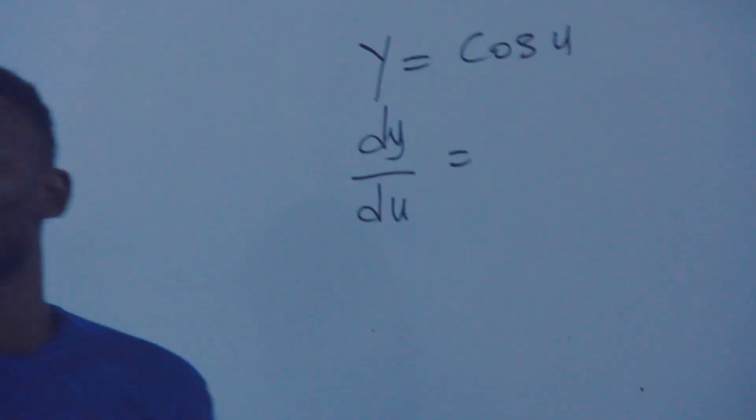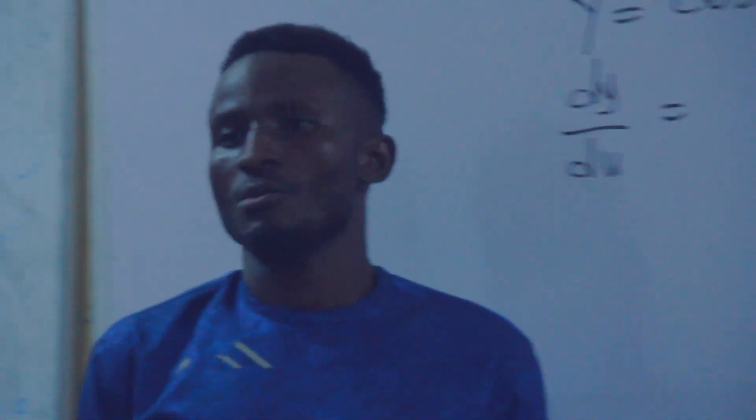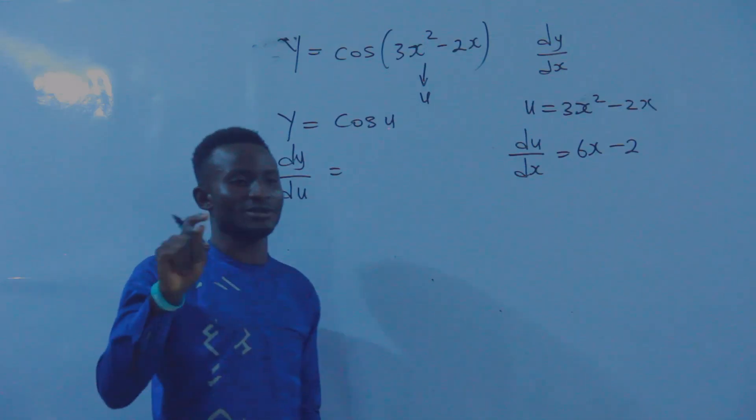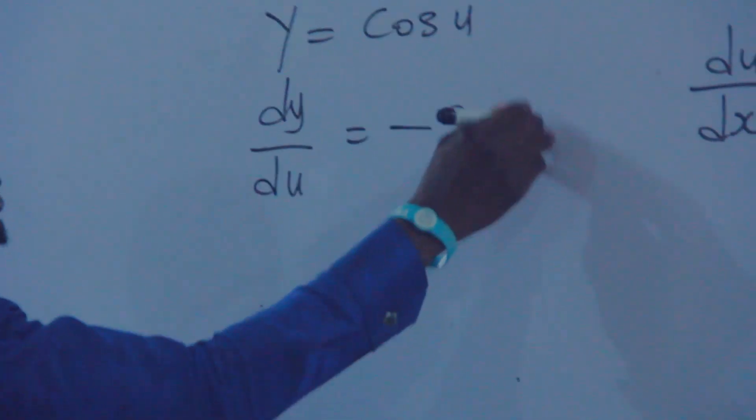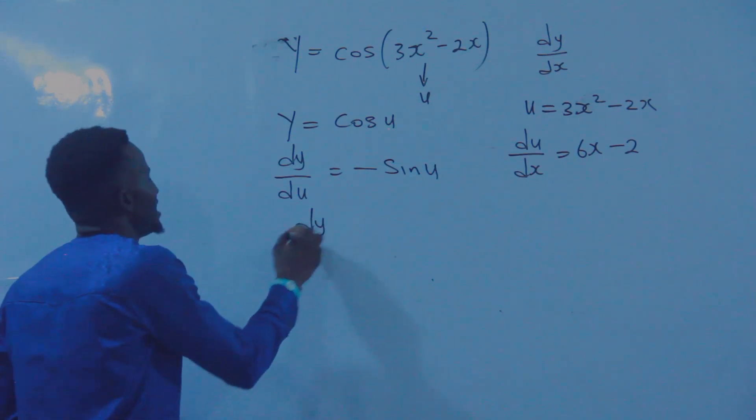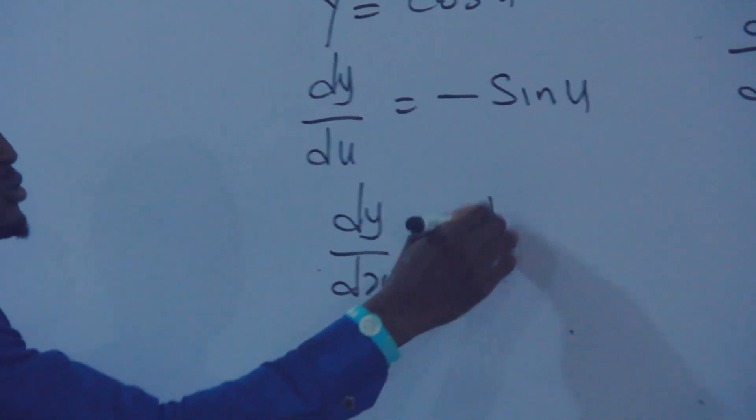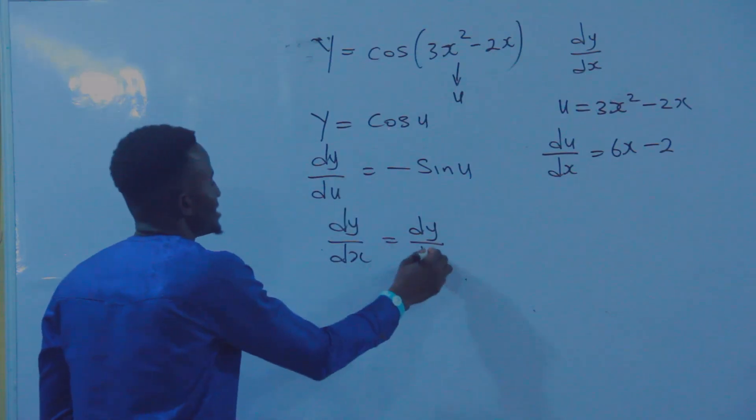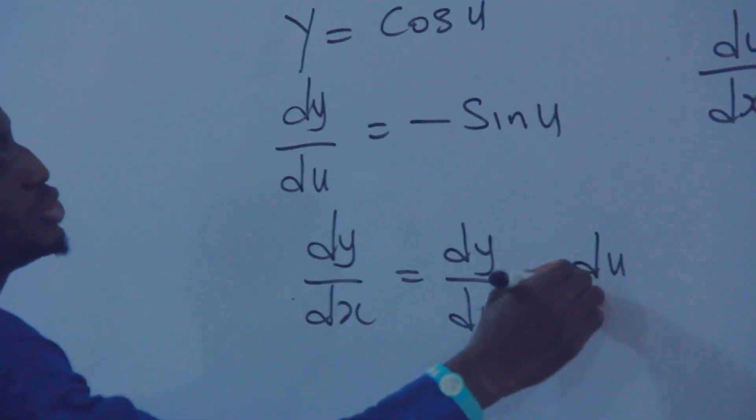The differentiation of sine U will be cos U, but the differentiation of cos U will be minus sine U. So I'll be having minus sine U. Now, see this equation. How can I have dY/dX from this? dY/dX will be dY/dU, that is here, multiplied by dU/dX.